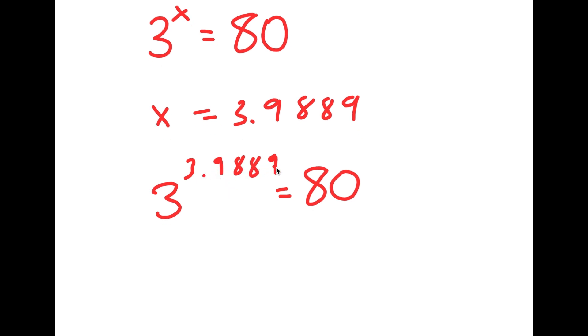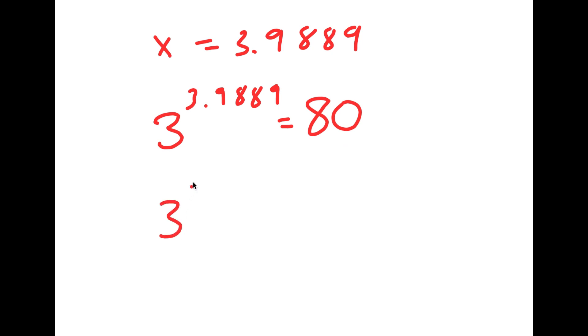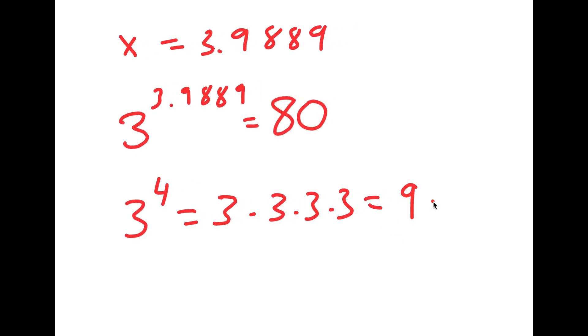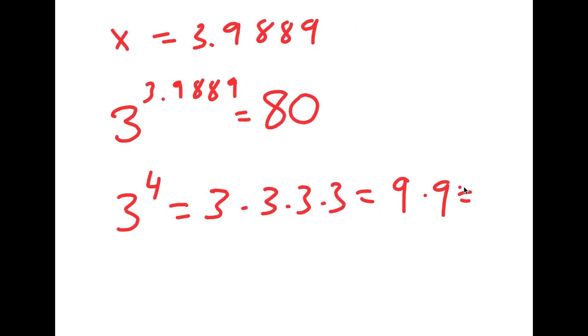Now, 3.9889 is really close to 4, right? So let's first find the value of 3 to the power of 4. 3 to the power of 4 is the same thing as 3 times 3 times 3 times 3, which is the same thing as 9 times 9, which is equal to 81.